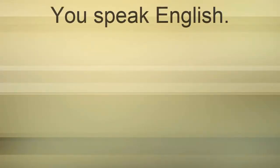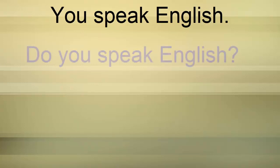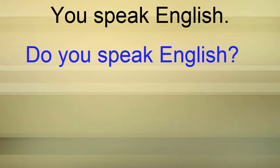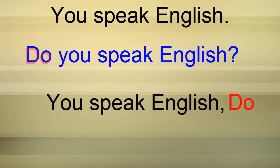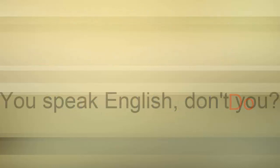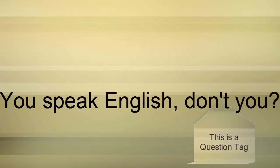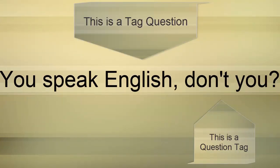To make a tag question out of a sentence, first put a general question to this sentence. Then you'll see what verb you should use in the tag. Here, it's DO. Join this DO to the end of your sentence — it must be the negative form of DO. It's DON'T. The tag here is DON'T YOU. You speak English, don't you?